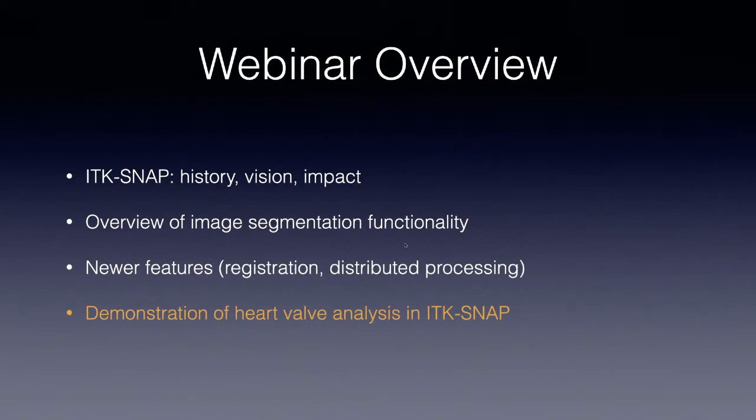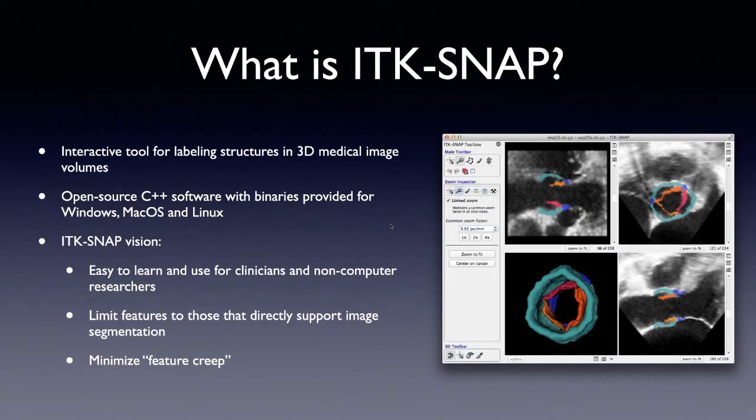I'll focus on the main functionality, which is image segmentation, and highlight some of the newer features added in recent years, like image registration and distributed processing — where you can send complex segmentation tasks to a third-party server to do the hard work for you. Then Allison will do a demonstration of a heart valve analysis in ITK-SNAP, and some of her work in that area is relevant to the biomechanics community. So — what is ITK-SNAP?